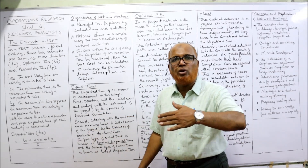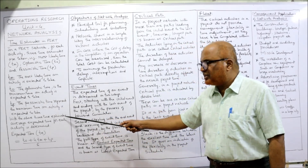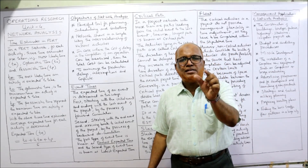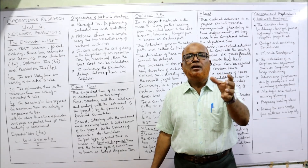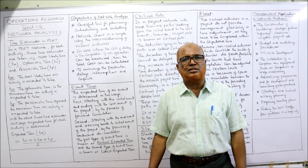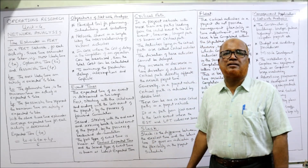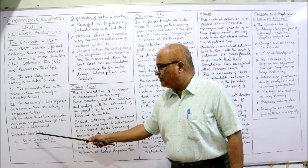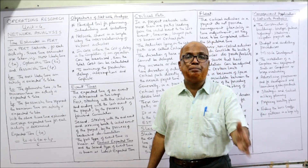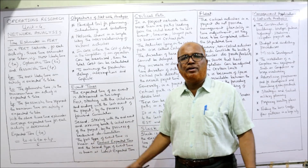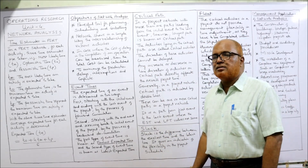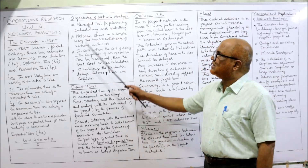Pessimistic time TP is the maximum time required to complete an activity. So: most likely time, optimistic time (shortest possible), and pessimistic time (longest, maximum time). With these three time estimates, the average expected time for each activity can be calculated. The formula to calculate expected time TE is: TE = (TO + 4TM + TP) / 6. Using this formula, we combine the three time estimates into one expected time.